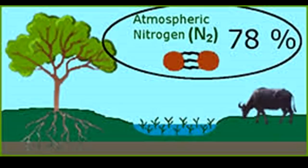Nitrogen is the most abundant element in the atmosphere at 78%.